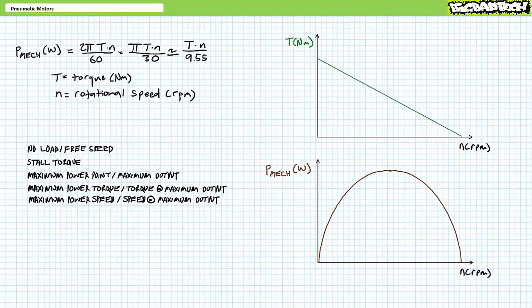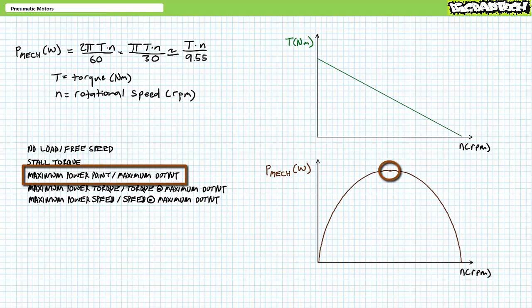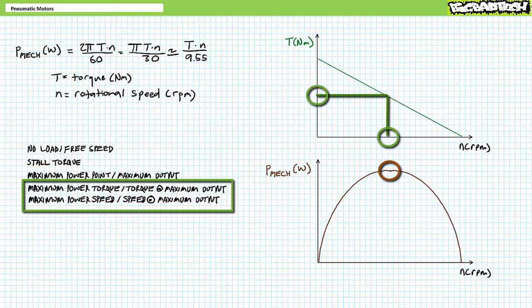Several points of interest can be found on air motor speed-torque and mechanical power curves: notably the no-load or free speed, the stall torque, the maximum mechanical power point, and the maximum power torque and maximum power speed. The no-load or free speed is the speed of the shaft when exerting no torque—this is the far right of the speed-torque curve. Stall torque is the torque exerted by the motor when it comes to rest from a running condition. The maximum power point typically occurs around 50% of the free speed.